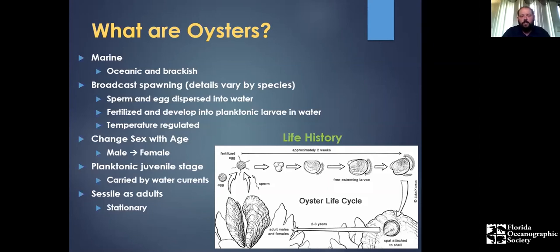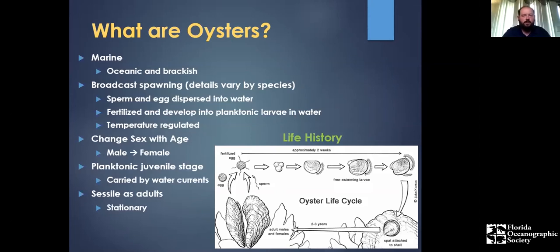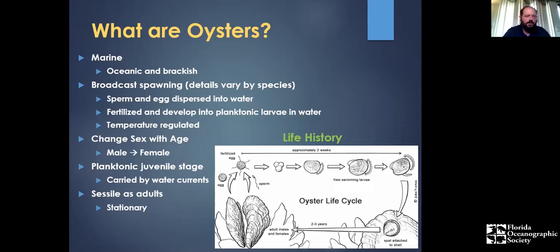At the end of that planktonic period, once they've developed enough, larvae start searching for a place to settle and live permanently. After a couple of weeks, they bounce along the bottom looking for a hard substrate — another oyster shell, a seawall, a rock — where they attach and start growing. When they attach, they're called 'spat,' a term that will come up several times. Critically, if they don't find a place to settle after those several weeks and there's no hard substrate, they die.